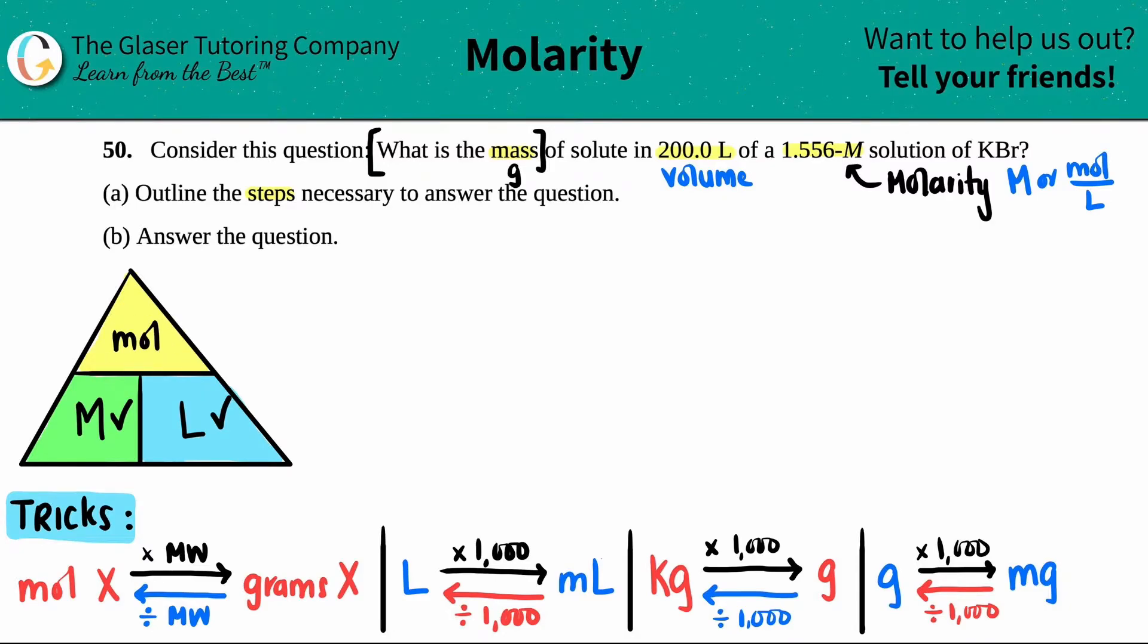That's the only, these are the only three units that are related: molarity, liters, and moles. So by this information and knowing this, we can only solve for a mole right at the moment. So for letter A, the first step is to get the moles of KBr. And I say KBr because that was the compound that they gave us.